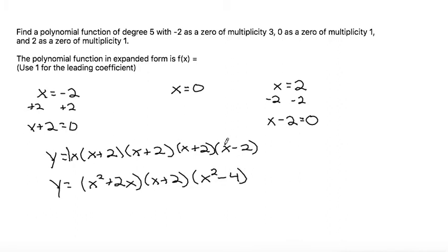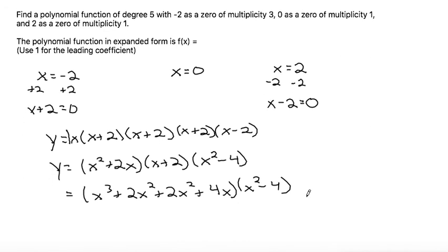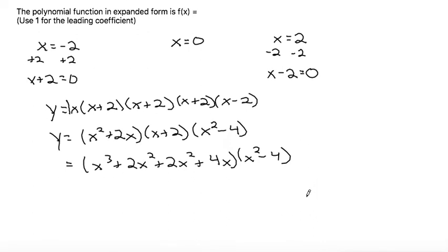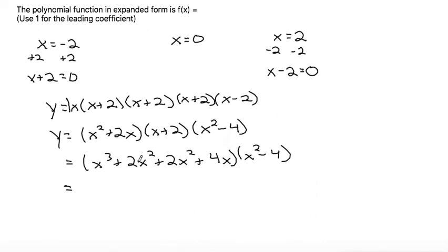From here, I'll FOIL my first two parentheses out to make x cubed plus 2x squared plus another 2x squared and then plus 4x and bring down my x squared minus 4. I can add my like terms to make this x cubed plus 4x squared plus 4x times x squared minus 4.